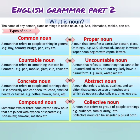Now there are different types of noun. The first is common noun — a noun that refers to people or things in general. For example: boy, country, bridge, pen.